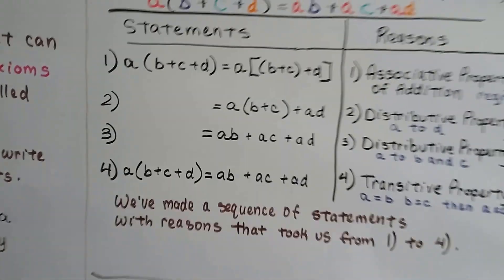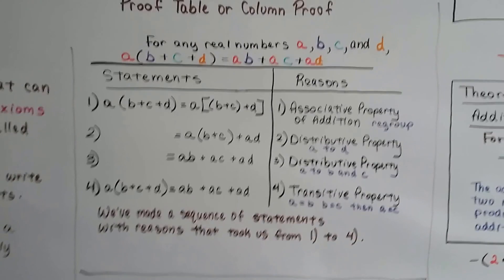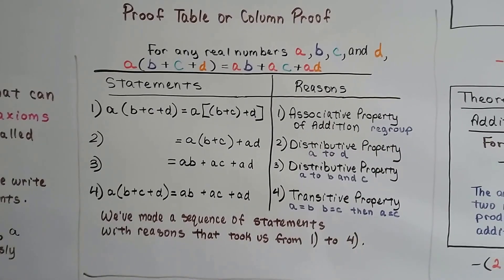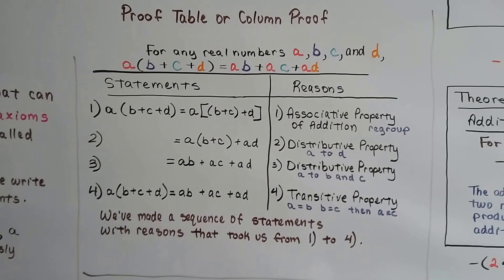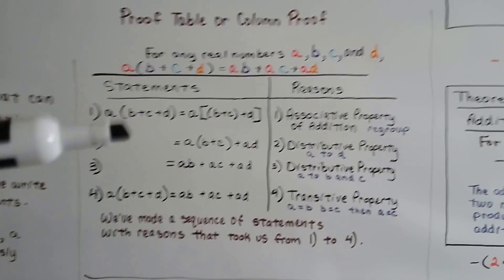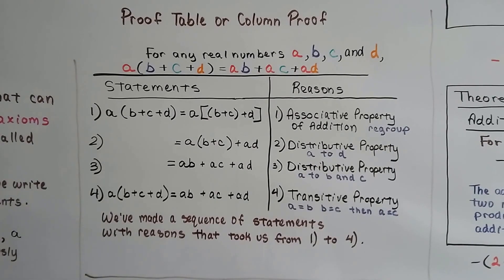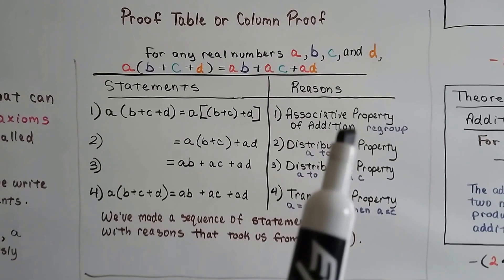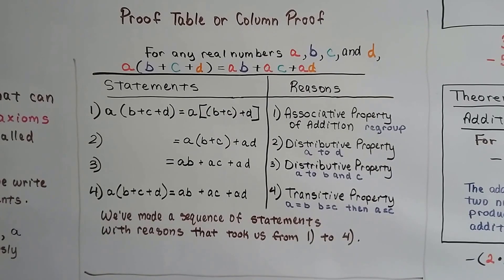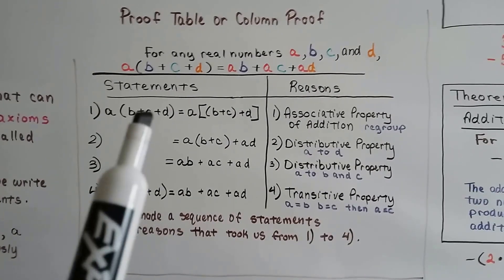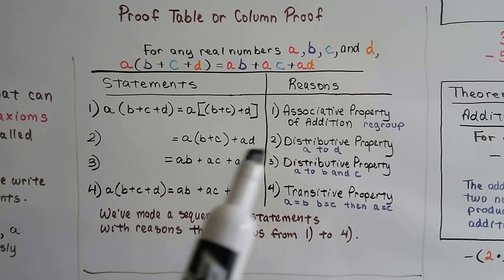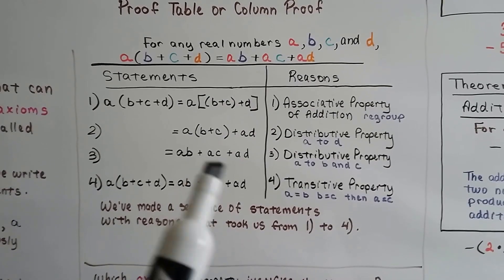Here's a proof table, or a column proof. It's got statements on one side, reasons on the other, separated by a line, and it's numbered. We support each statement with a reason — an axiom, a property, a definition, or a previously proved statement. We make a statement and give a reason, then make another statement based on that and give another reason.